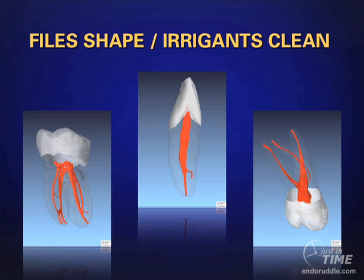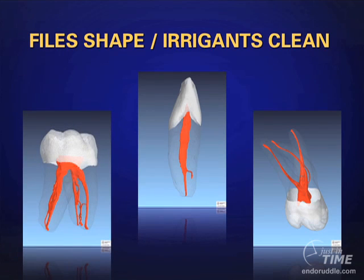All files do is shape a canal. Shaped canals hold a reservoir of reagent, and it's the reagent that can be activated and exchanged into the deep lateral anatomy. Looking at Frank's micro-CTs, you can see that our files would have a very small possibility of even remotely touching all the internal walls of the primary canal, much less the anastomosing and origination of a third apical portal of exit in the mesial system.